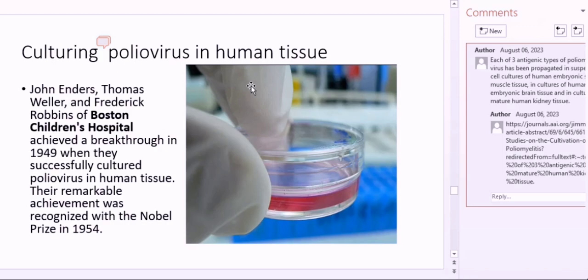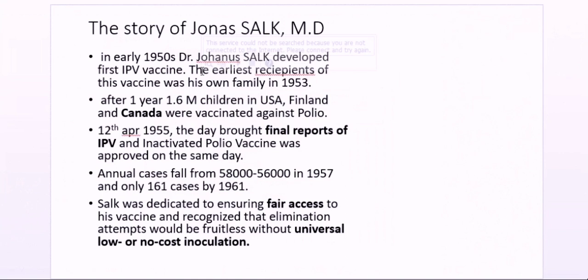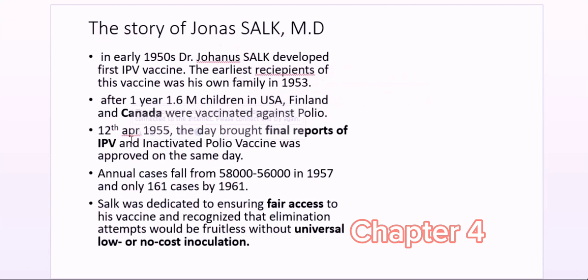In the early 1950s, Dr. John Salk developed the first inactivated polio vaccine, IPV. Notably, he first tested the vaccine on his own family in 1953. After one year, 1.6 million children in the United States, Finland, and Canada were vaccinated. April 12, 1955 was the landmark day when the final reports of the IPV trials were announced and the vaccine was officially approved.